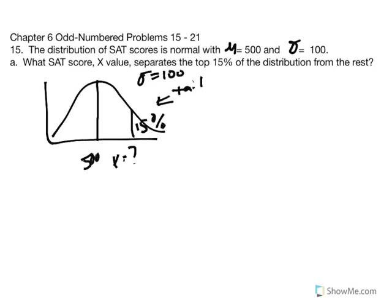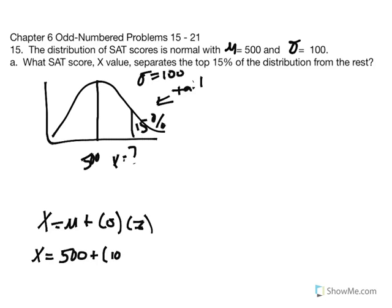What we're going to do is recognize that we're solving for X. X is equal to mu plus our standard deviation multiplied by our Z score. We know the mean is 500, plus the standard deviation of 100, and now we need to find the Z score. To do so, we convert 15% into a proportion: 15 divided by 100 gives us 0.1500. We'll use the unit normal table, column for proportion in the tail, and look for 0.1500.